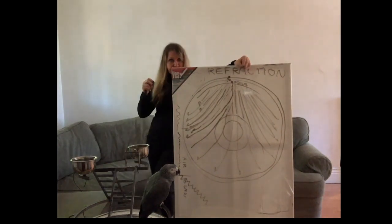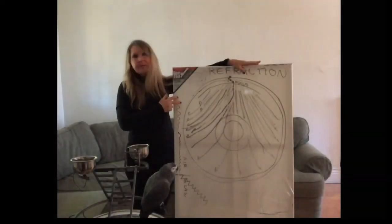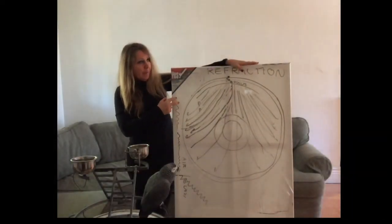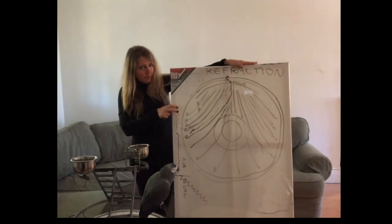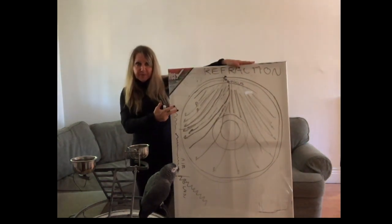So P comes first, S comes later, and that's the way to determine. So I want you to do, for number seven, number seven, stop and think, I want you to tell me how we can determine how close we are to an earthquake using the waves.